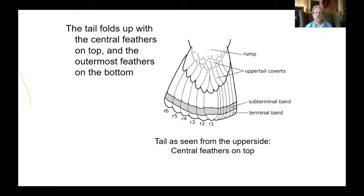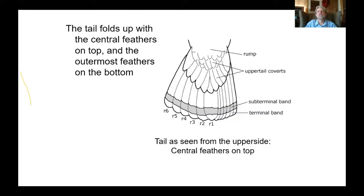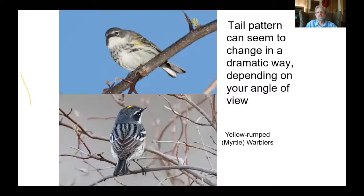Tail pattern is another thing that can seem to change from minute to minute. Here's a diagram of the bird's tail as viewed from the upper side. The important thing — and I was watching birds for years before I understood this — is that when the tail is completely folded up, the central feathers are on top and the outer feathers are on the bottom underneath. So depending on whether you're seeing the bird from the back or above, or from the front below the tail, the color of the tail can seem to change a lot.